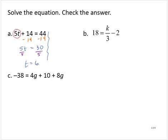Let's check our answer. Is 5 times 6 plus 14 equal to 44? Following the order of operations, 5 times 6 is 30. 30 plus 14 is 44, which is equal to 44. That checks out. And so our solution is t equals 6.